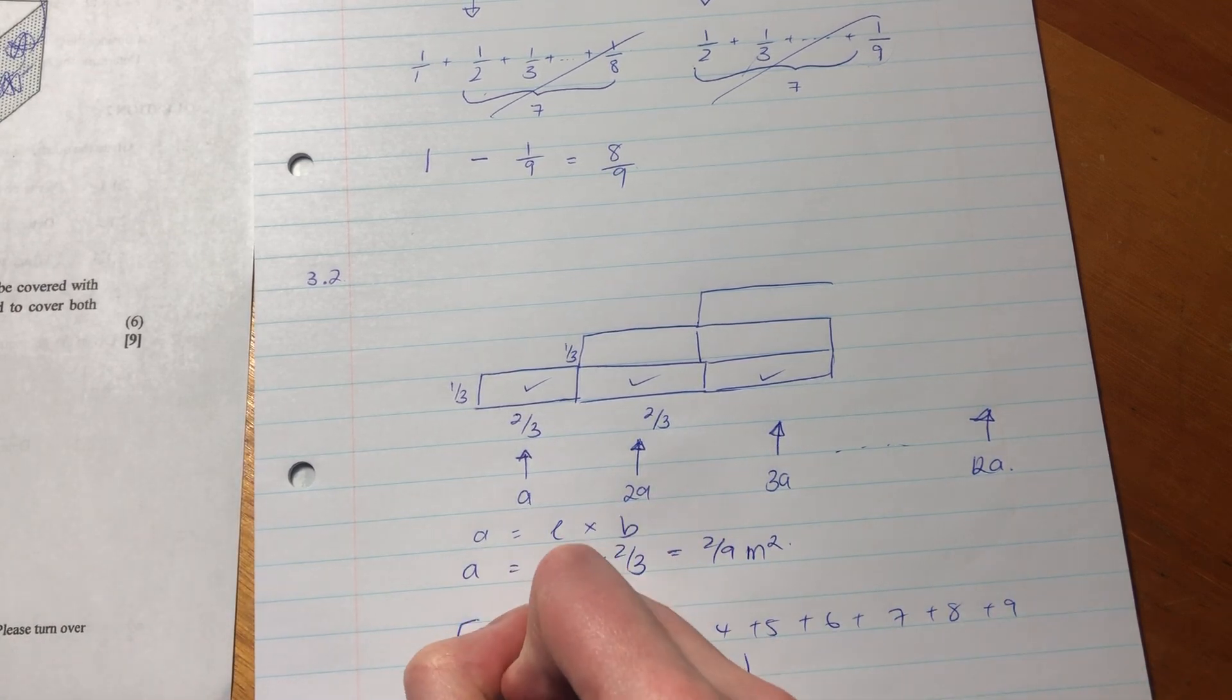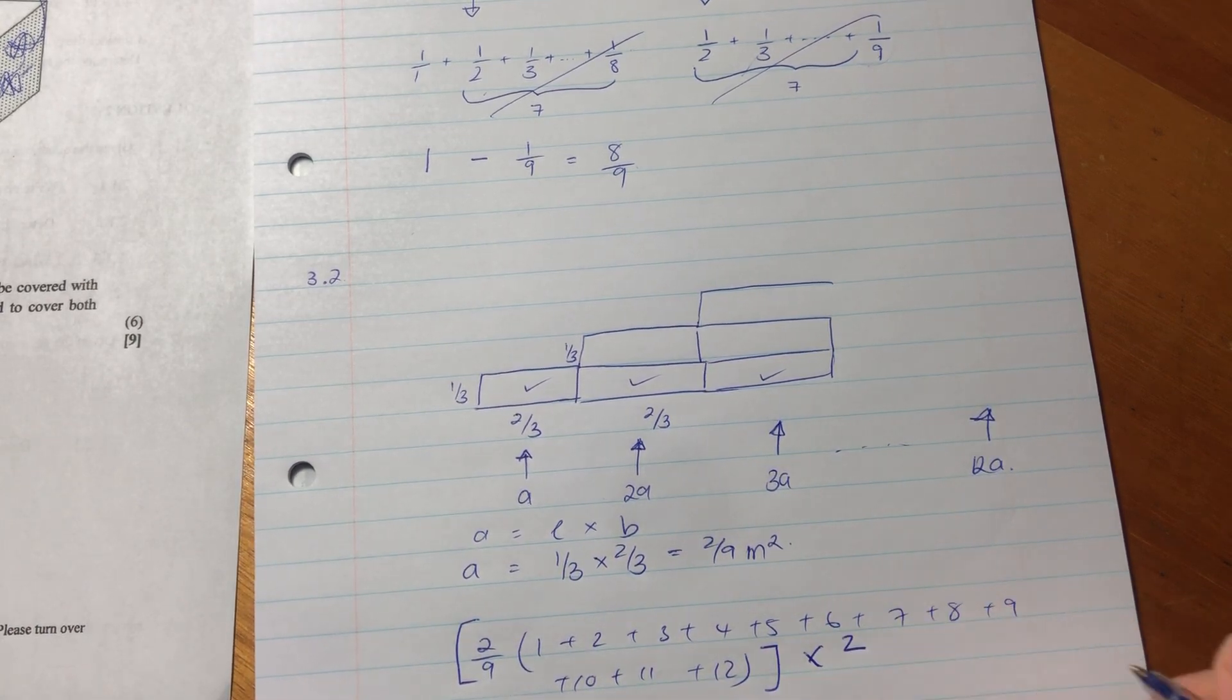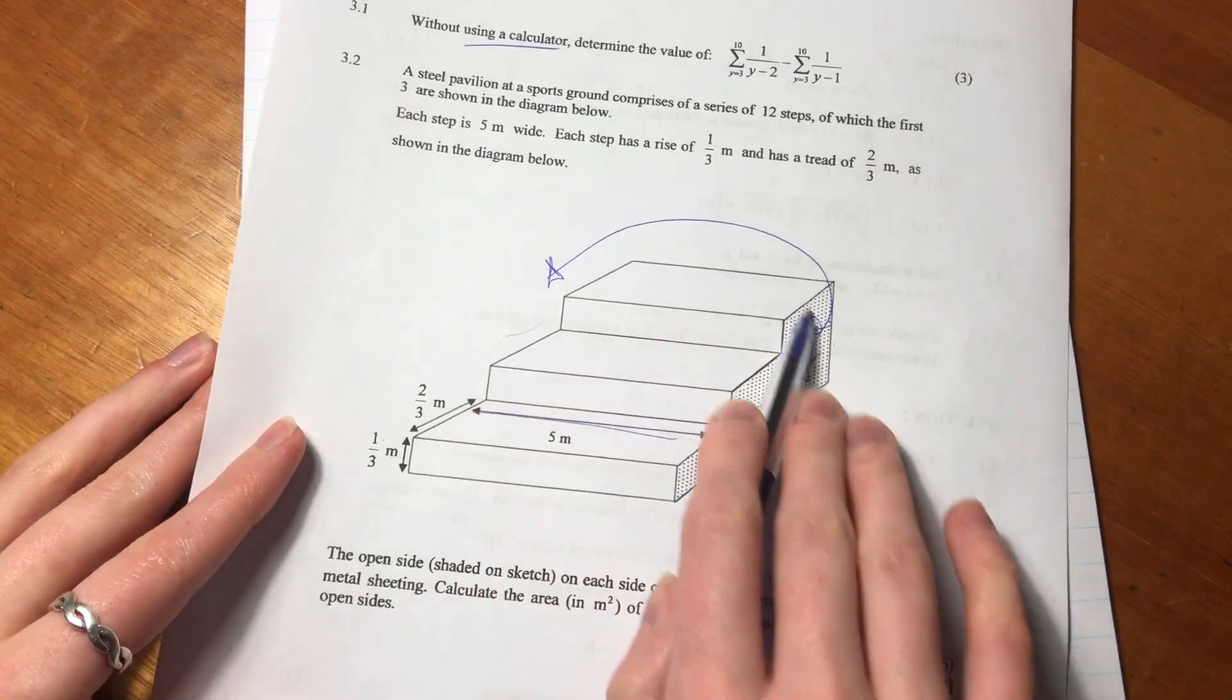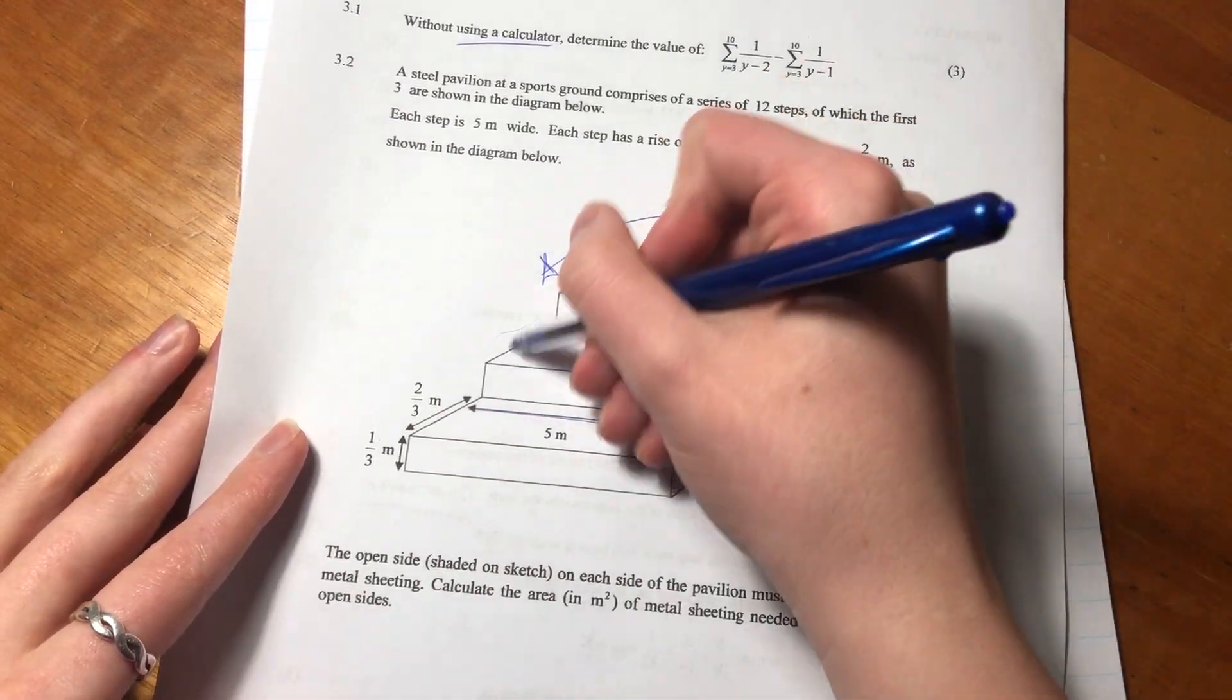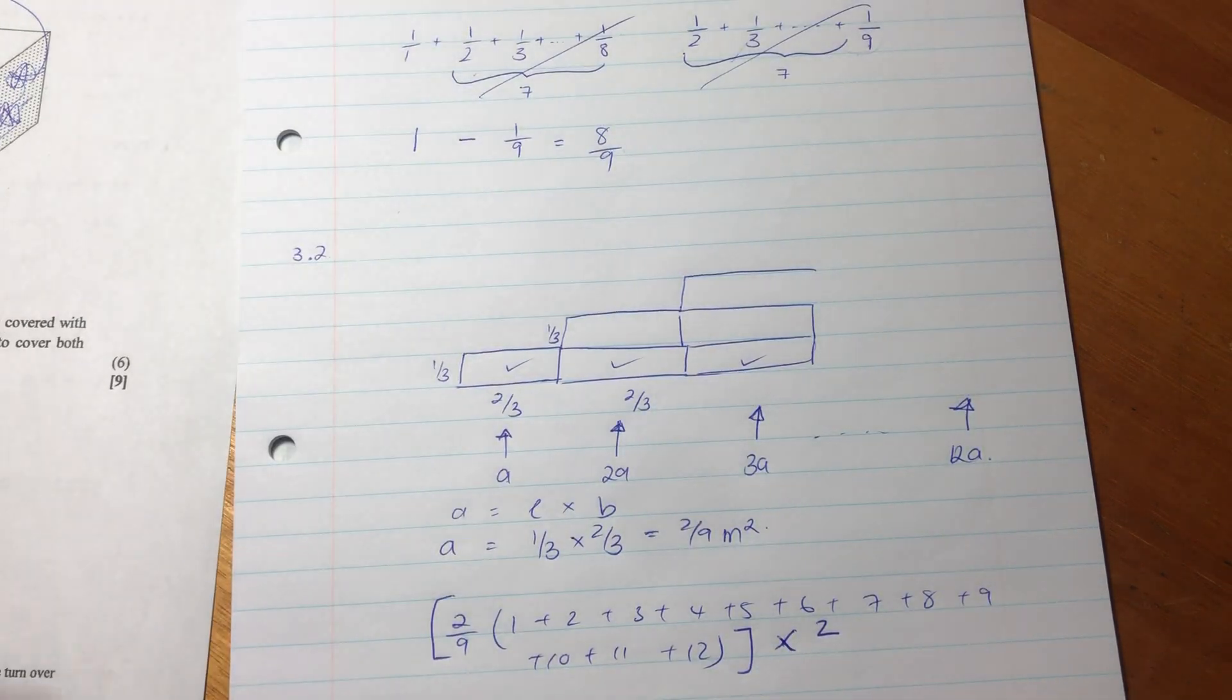But we have to multiply this whole thing by 2. Why? Because we have two sides of the pavilion. The question asks for both sides, so we multiply by 2.